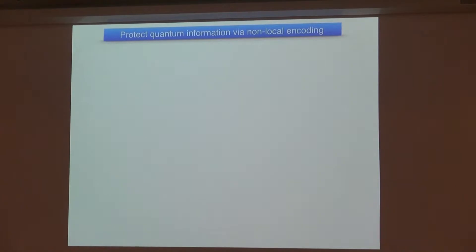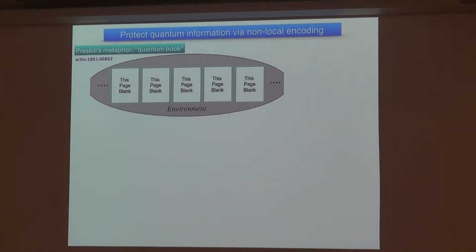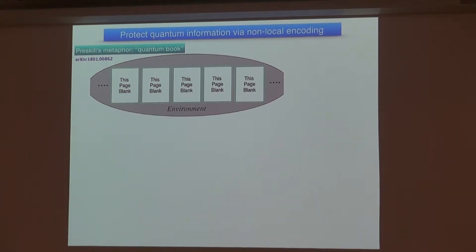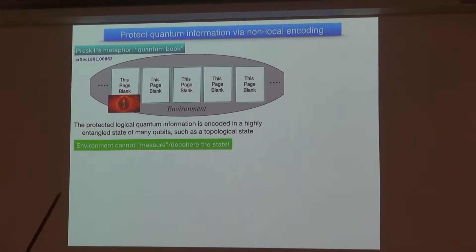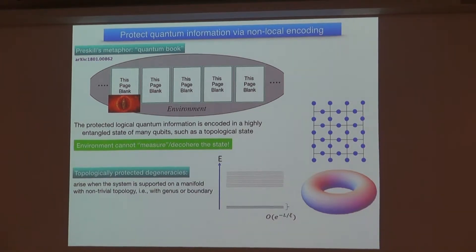There is a clever way to avoid that, which is to encode your quantum information non-locally. I really like the metaphor by John Preskill that you make a quantum book. What this means is that locally there's no information. You encode the quantum information in a collective way into the highly entangled many-body states of these qubits, such as the topological state. In this way, the environment tries to read the quantum book but cannot get any information, and hence cannot decohere the state.